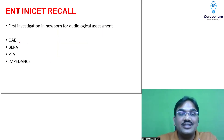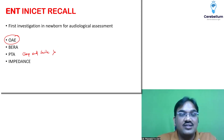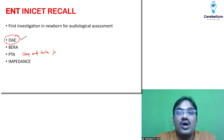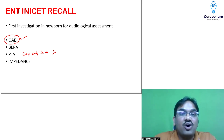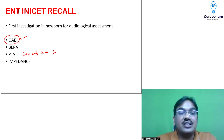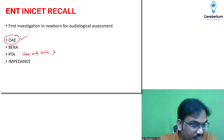The first investigation in a newborn for audiological assessment is always otoacoustic emissions (OAE). Some say the clap-and-smile response, but that is not the answer. Even the next minute after the baby is born, you can perform OAE. It is the most common, best, and objective investigation. Clap-and-smile is subjective. OAE is the best method to rule out congenital hearing loss. If abnormal, then after three to six months you proceed to BERA.